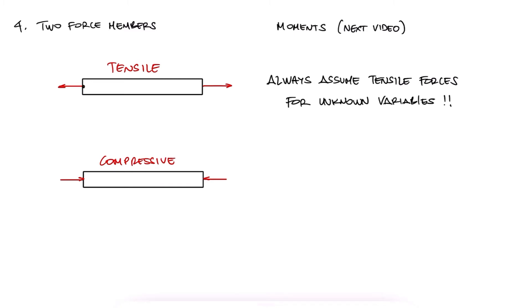If the variable we're solving for is positive, then the member was in fact under tension, and if the force yields a negative value, then it means that the force vector should point in the opposite direction, and the member is therefore under compression.